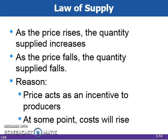Producers are willing to produce and sell more of their product at a higher price than at a lower price. There is a direct or positive relationship between price and quantity supplied. Given product costs, a higher price means greater profits and thus an incentive to increase the quantity supplied. Beyond some level of output, producers usually encounter increasing costs per added unit of output and therefore require higher prices in order to produce more.